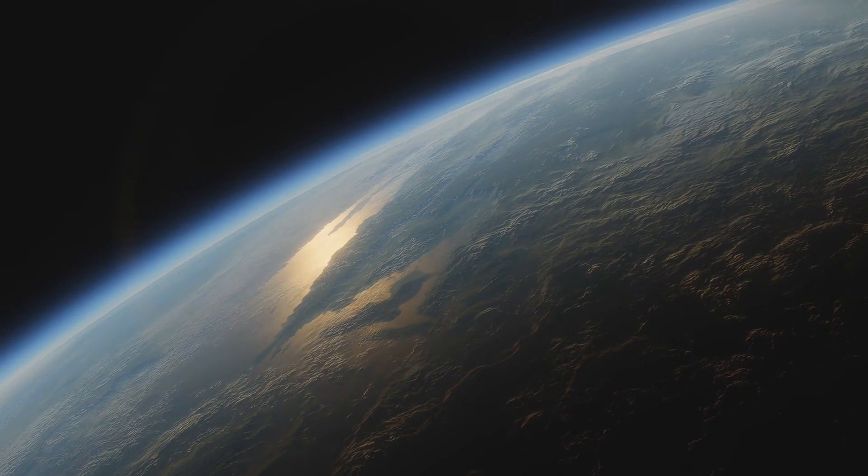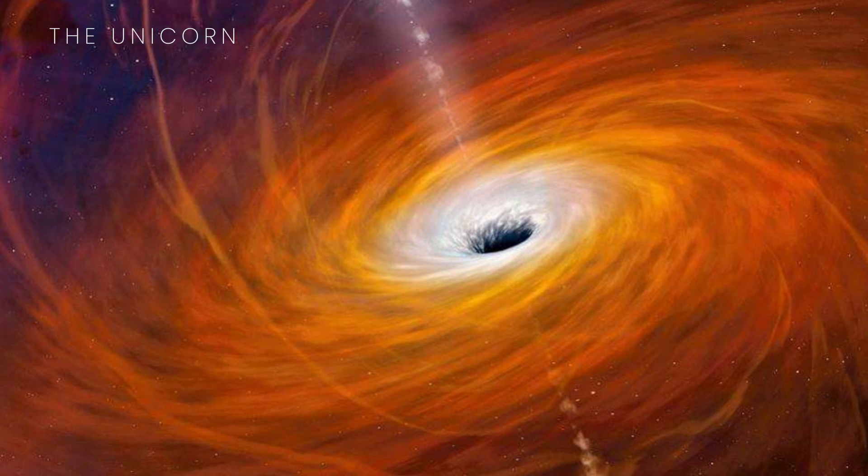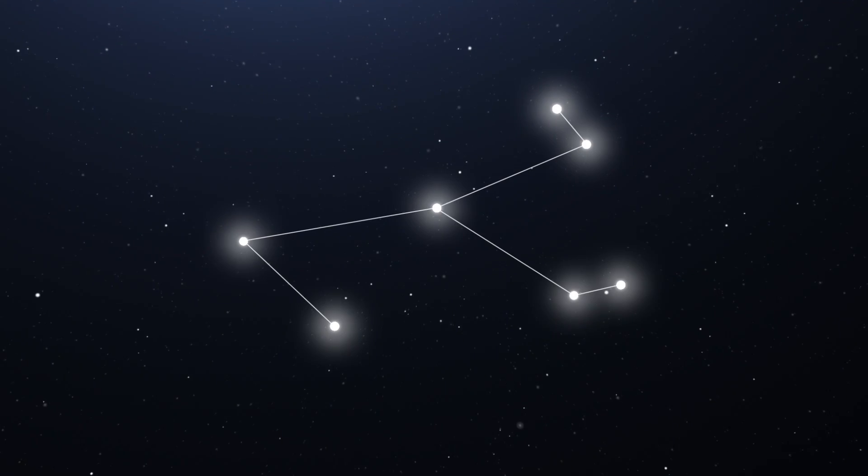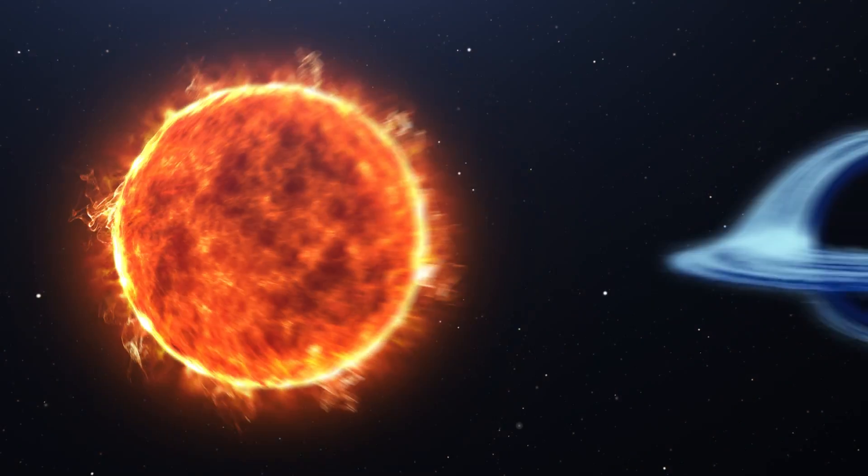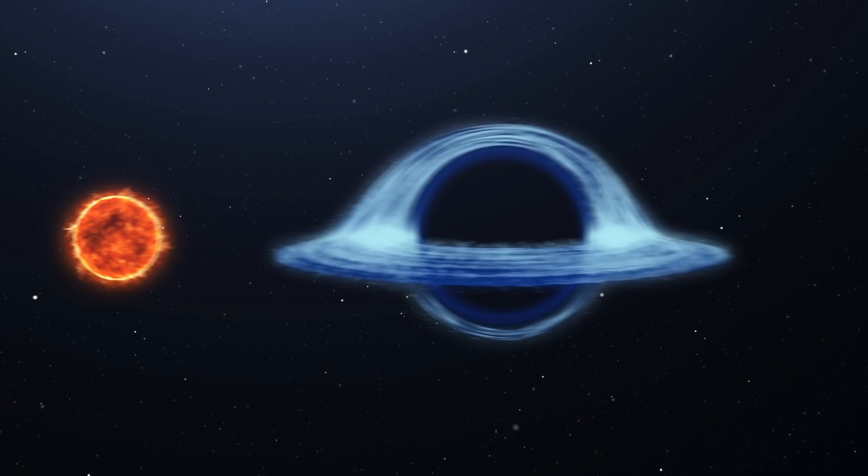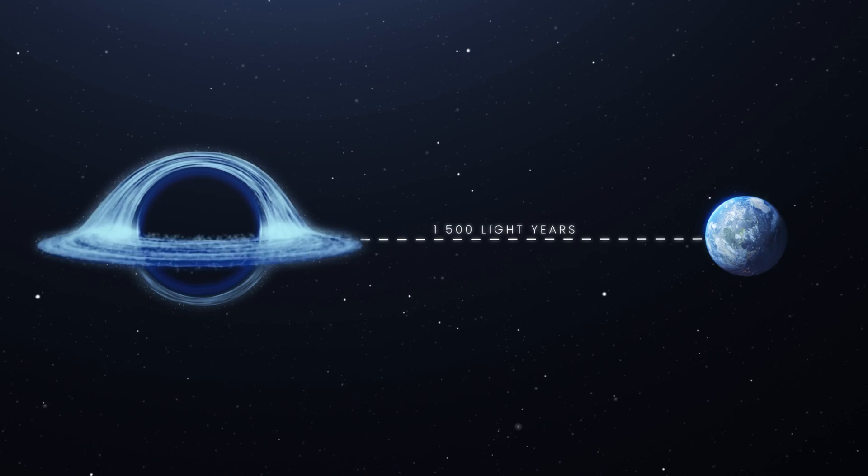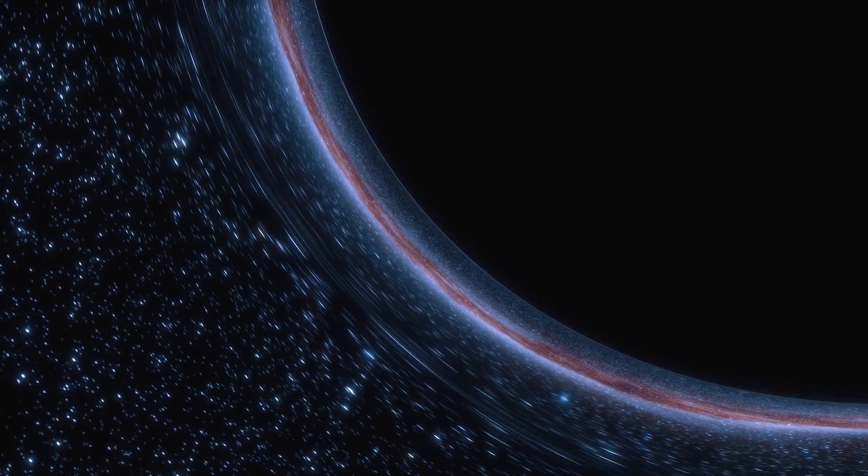Astronomers have named it the unicorn, because so far it's the only one of its kind and it's in the constellation Monoceros the Unicorn. It's about three times the mass of our sun, which is tiny for a black hole, and it's about 1,500 light-years from Earth, which means you don't need to worry, it's not going to come and swallow us up anytime soon.